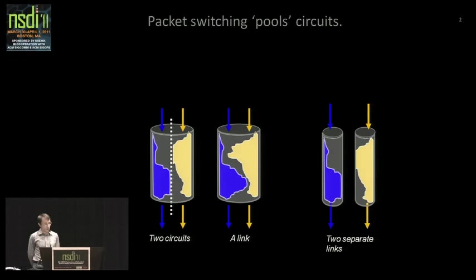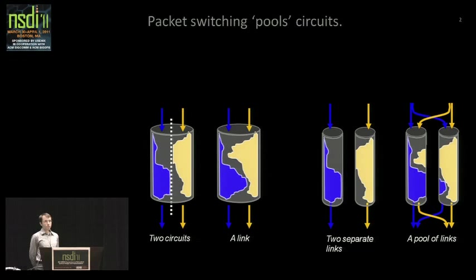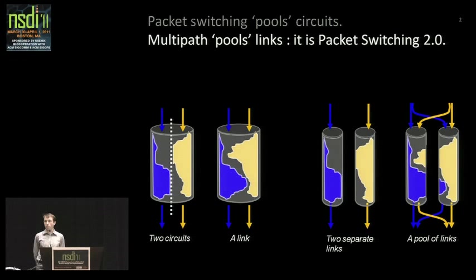Here I've drawn two separate links with two separate flows. If there's a surge in one of the flows — say the yellow flow has a surge — it just makes sense that it should be able to use unused capacity elsewhere in the network. And multipath lets this happen. If each of the flows is able to use both of the links, then you can accommodate surges quite happily. In that sense, I would like to talk about multipath as packet switching 2.0.